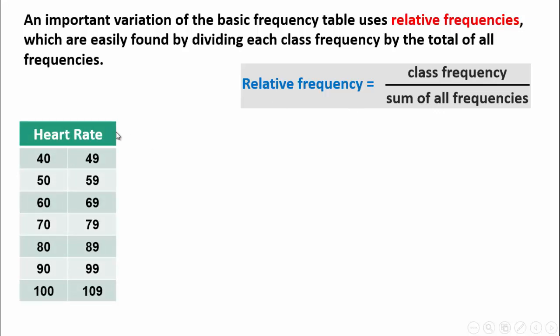For example, we have a frequency table for the heart rate. The lower limit is 40, the upper limit is 49. So the first class is from 40 to 49. The second class is from 50 to 59 and so on. The last class from 100 to 109.